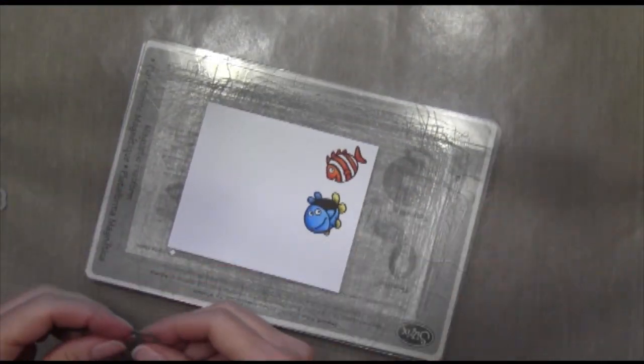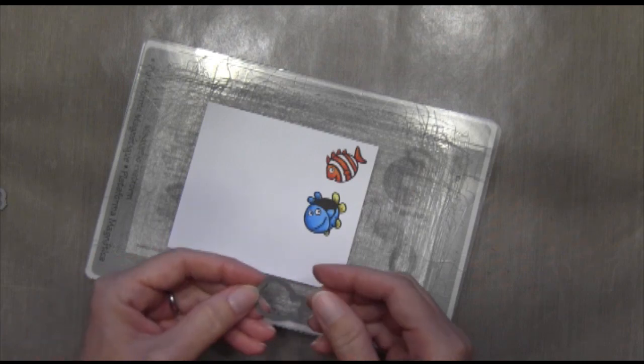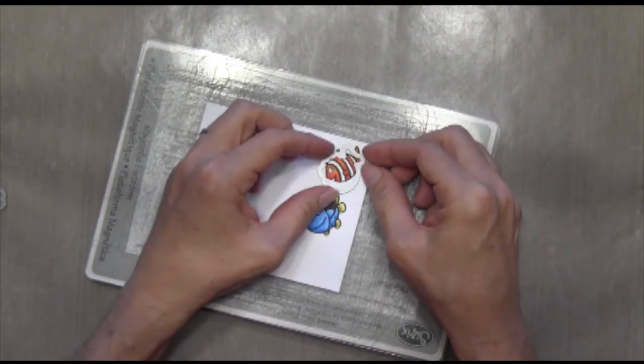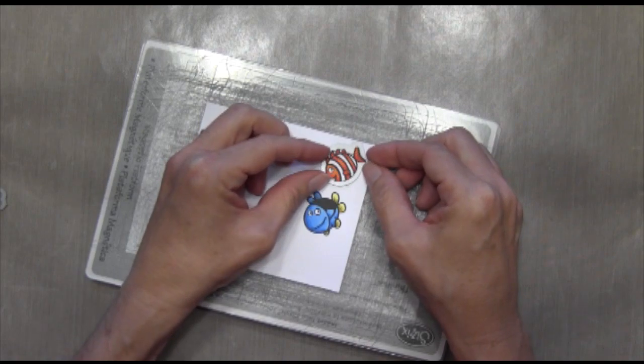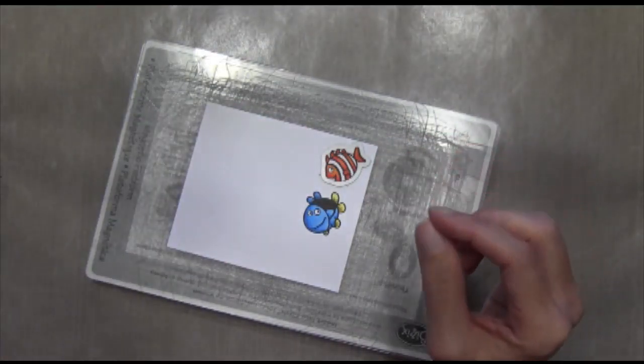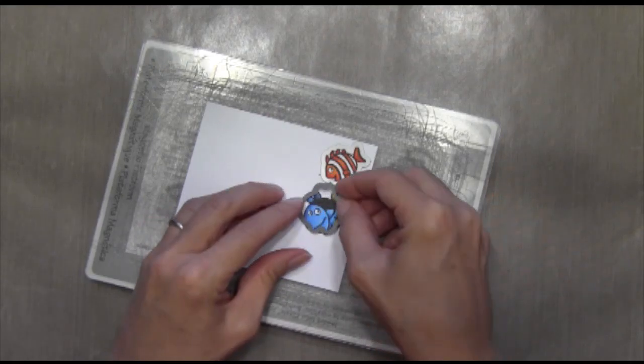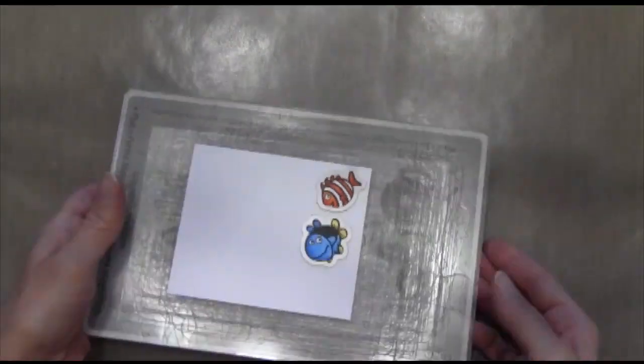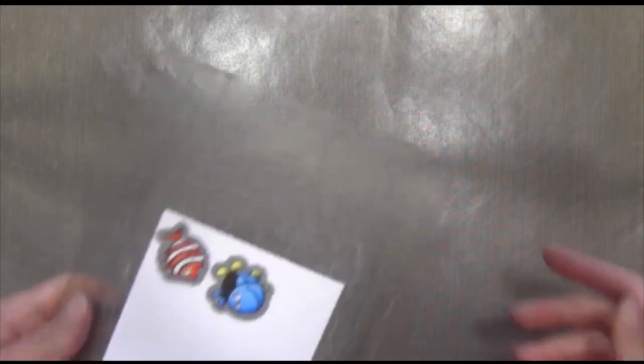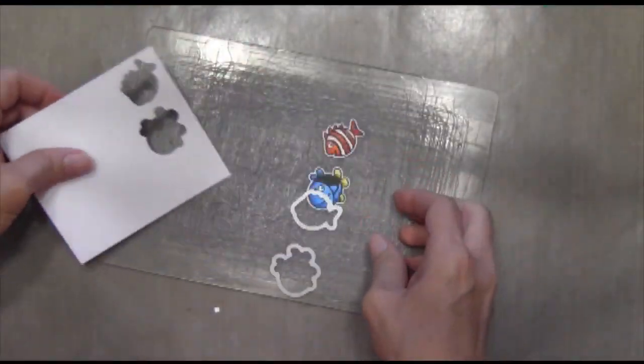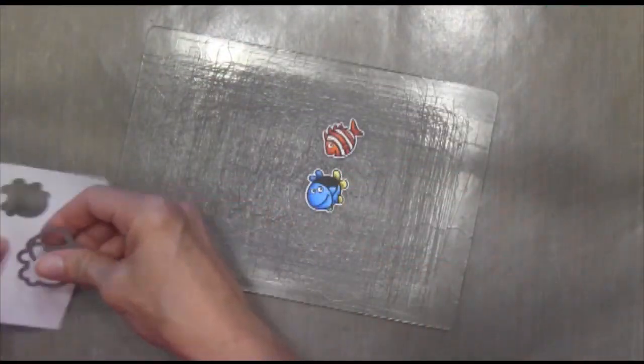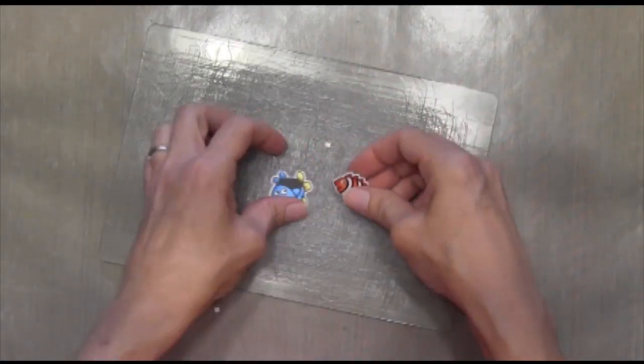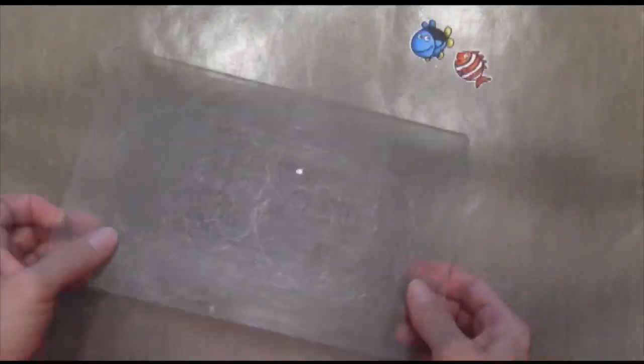All right. So I'm going to use the matching dies and I'm going to use my magnetic platform, which makes it so easy to get it just right on there. And then I'm going to run it through the Sizzix. All right. As I pull them out here, you can see how perfectly outlined they are.